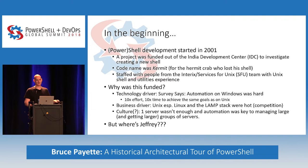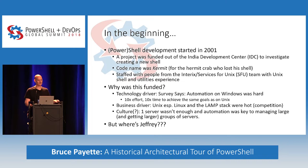The code name at the time was Kermit, because the person organizing this project had a child with a kid's book about Kermit, the hermit crab who lost his shell. We kept the Kermit name for about six months — it does not show up in the source code anywhere. The project was staffed by people from the Services for Unix team, which included a product called InterX, an extended version of the POSIX subsystem for Windows that was almost fully Unix compliant.